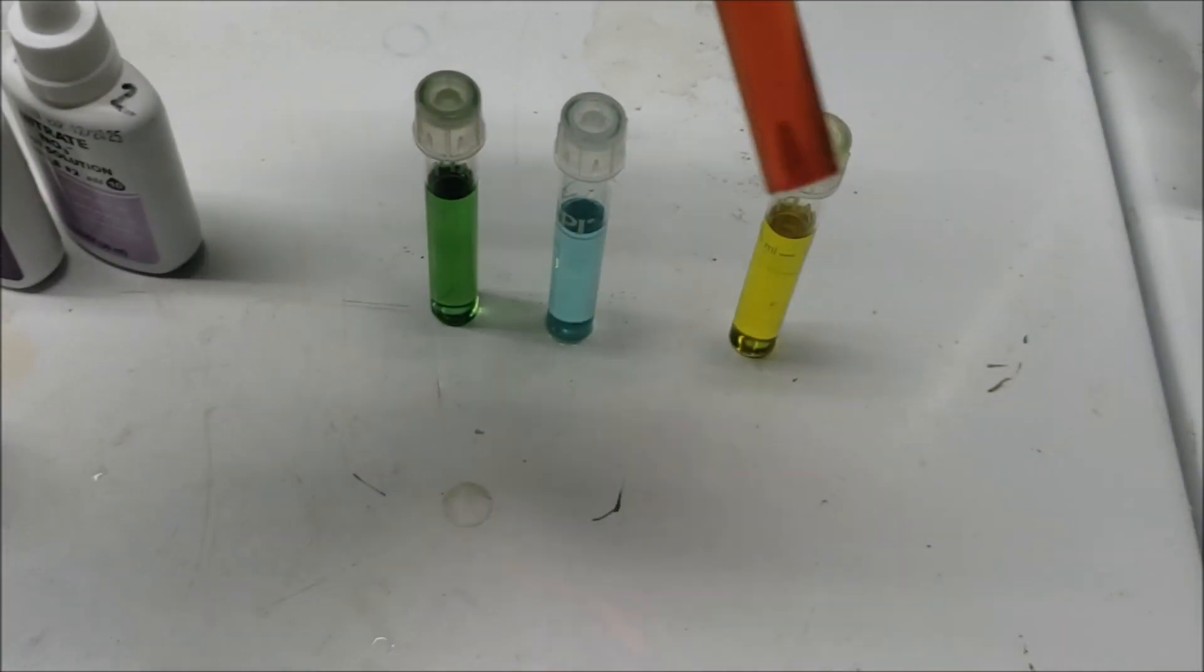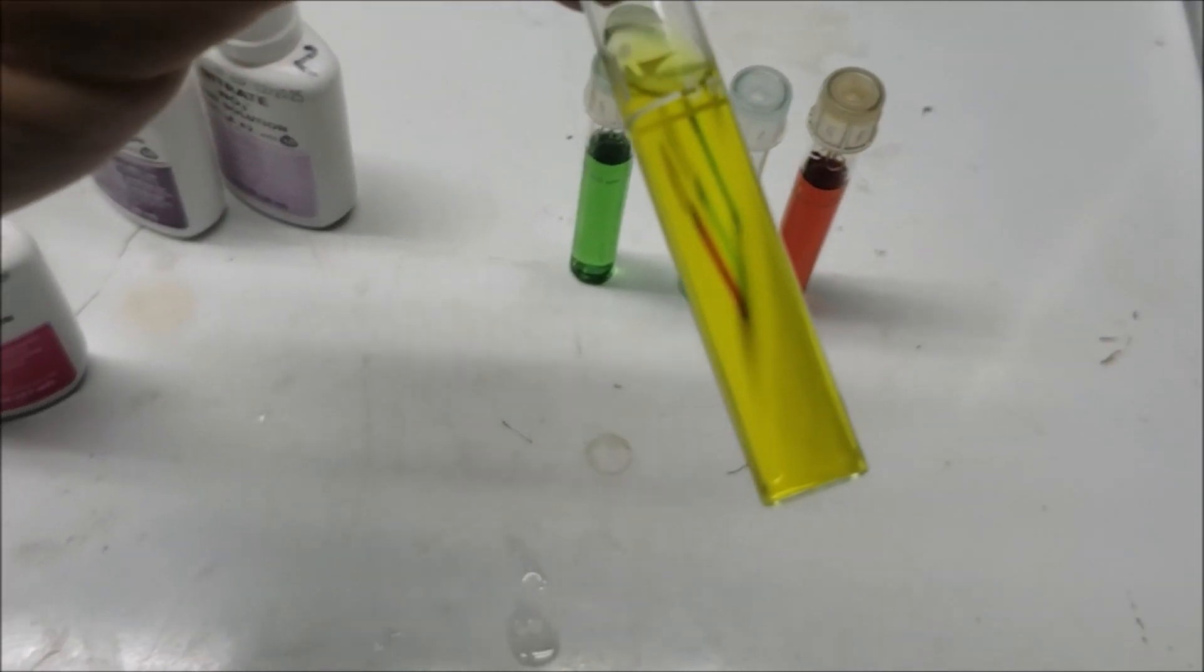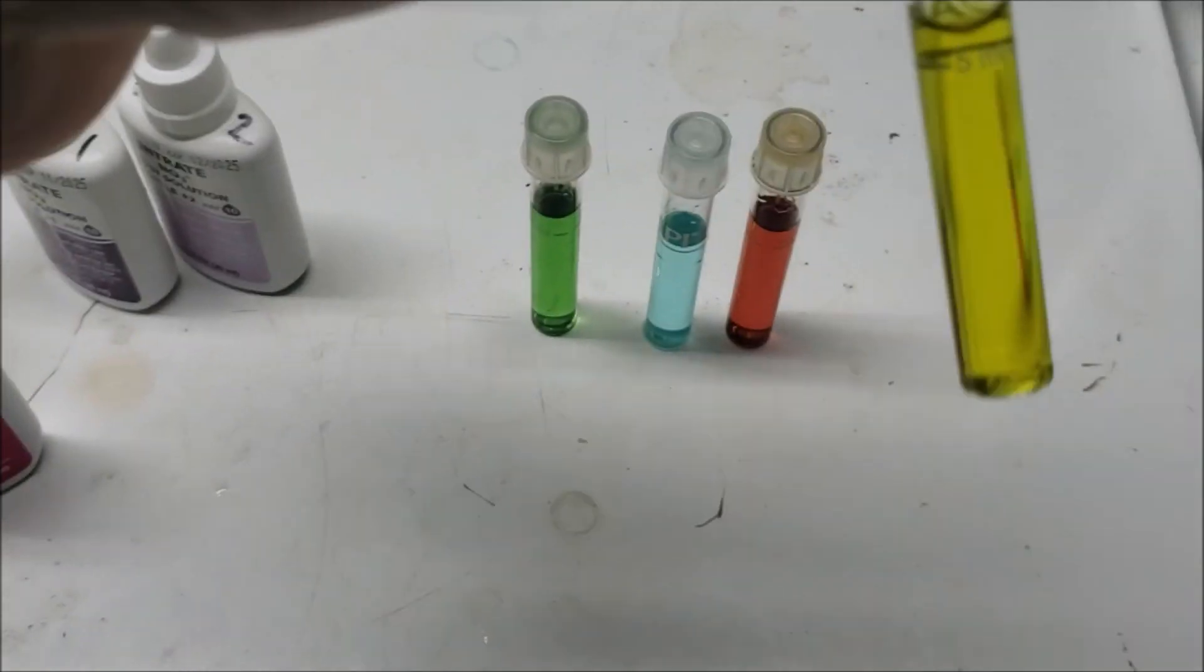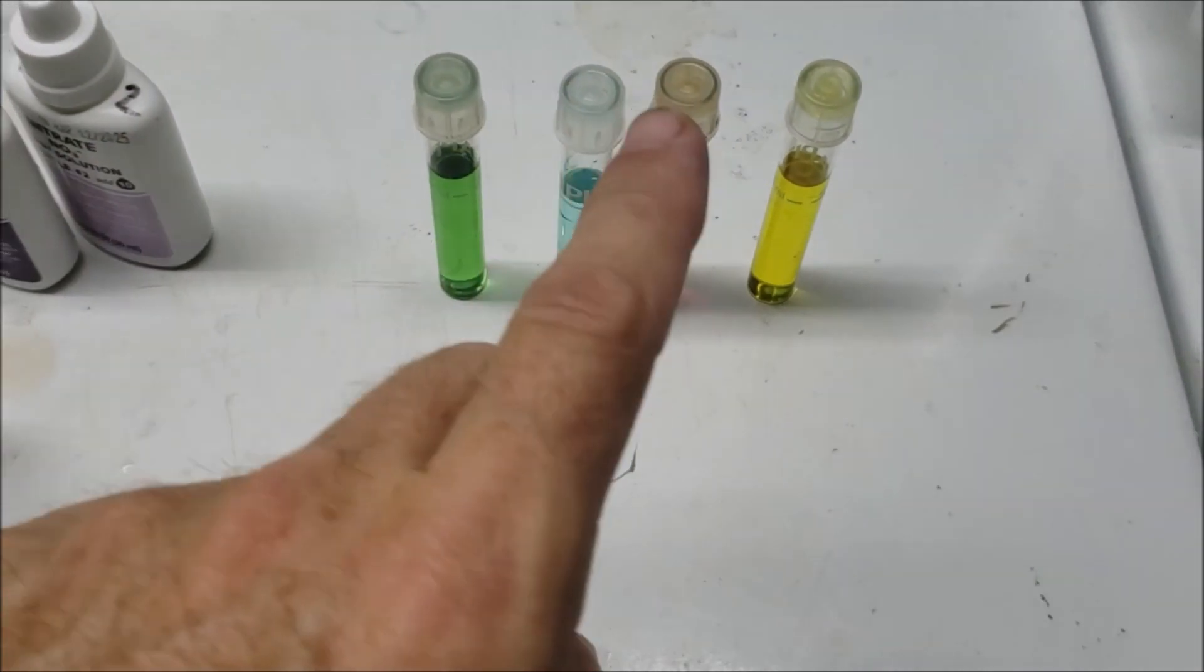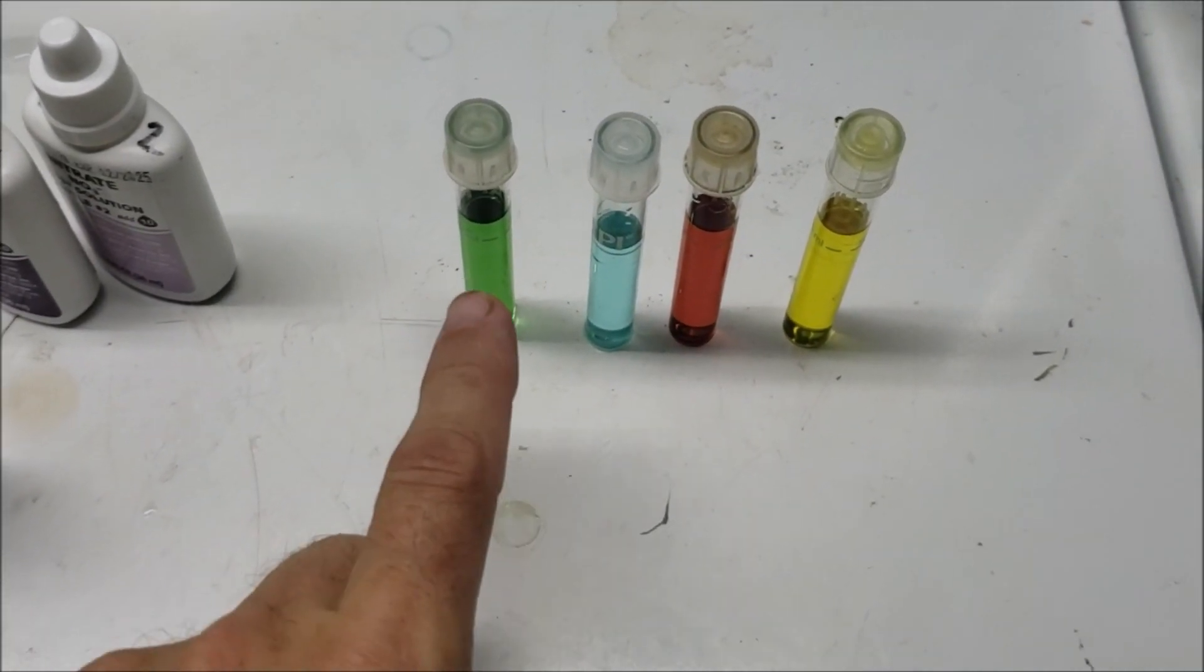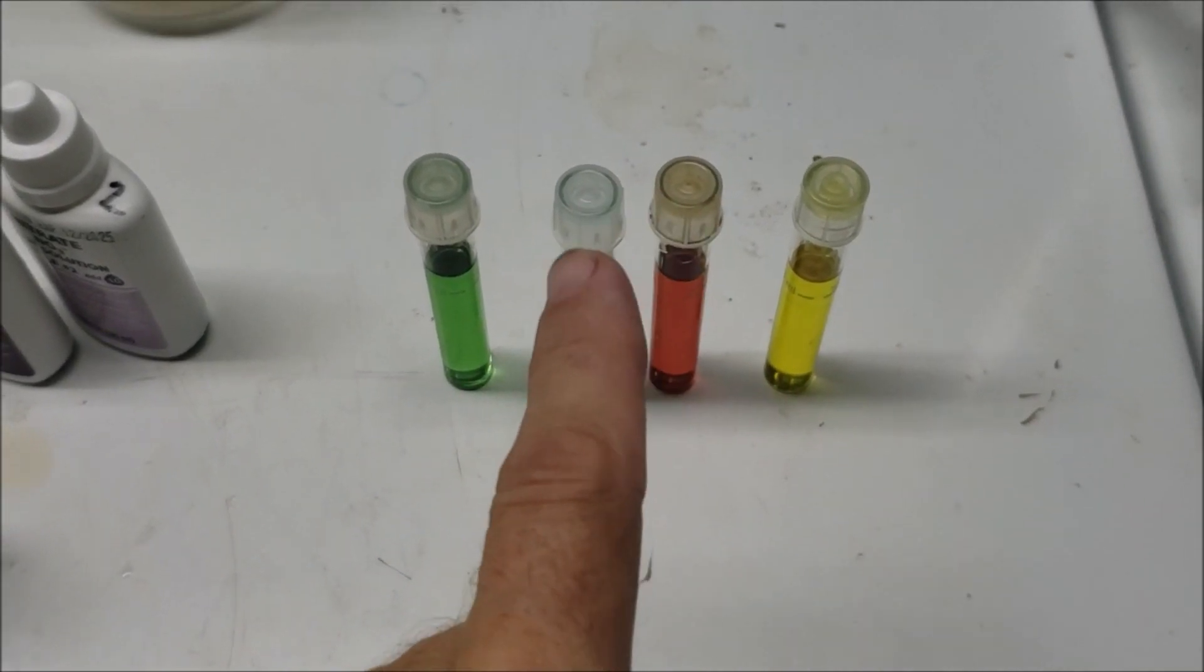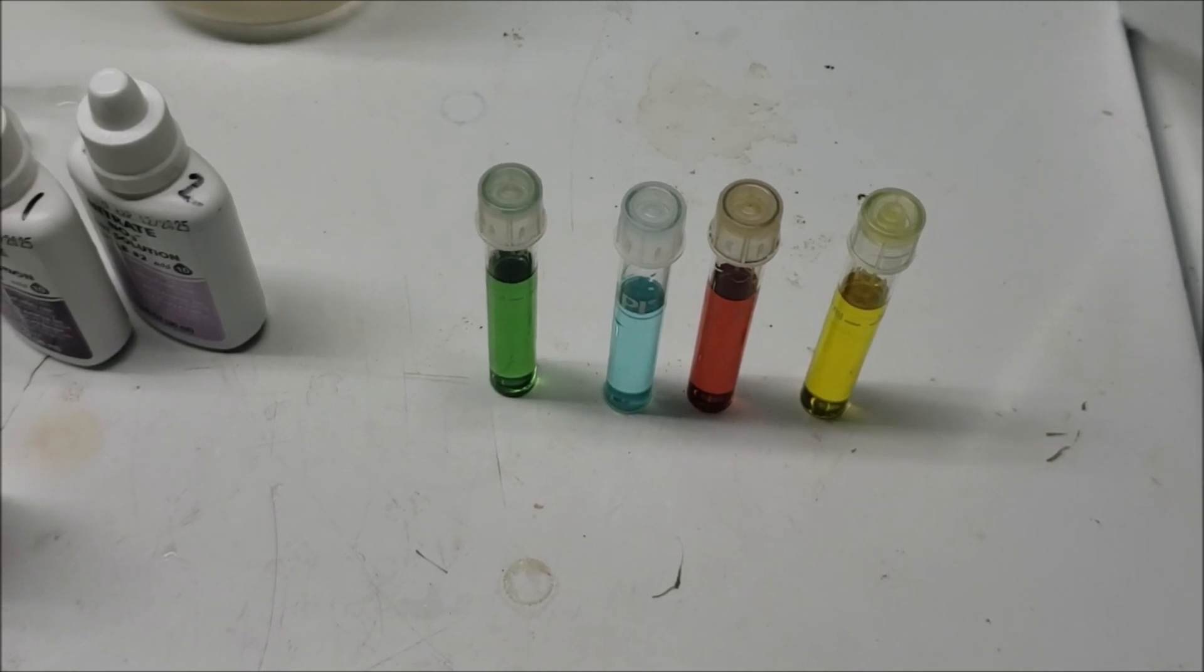And then when I tested the nitrate we actually got a fairly significant amount of nitrate. Just to double check to make sure that wasn't a bad test result, I checked my tap water and that is my tap water. So we don't have any nitrate coming in the tap water, yet we've got that much nitrate developed in the tank. We have a reduction of ammonia yet we've got no buildup of nitrite.